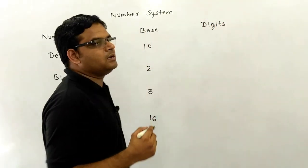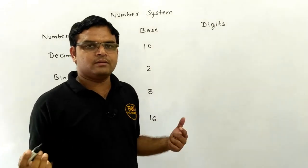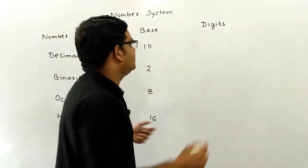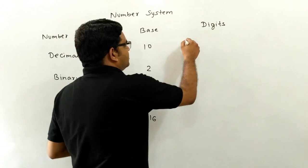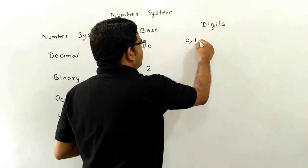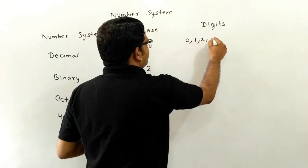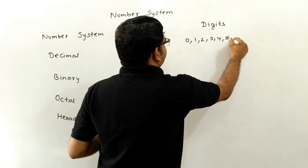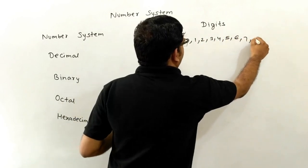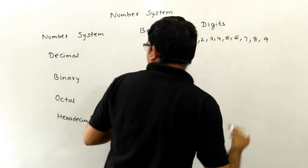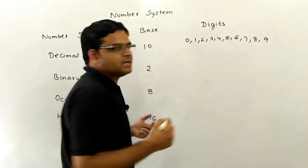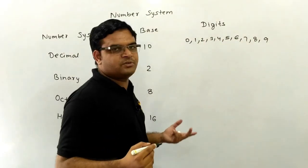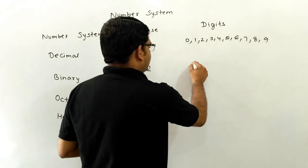In terms of number of digits, the decimal number system is comprised of 10 digits, which are 0 to 9 — so its digits are 0, 1, 2, 3, 4, 5, 6, 7, 8, and 9. The binary number system has only two digits, which are 0 and 1.